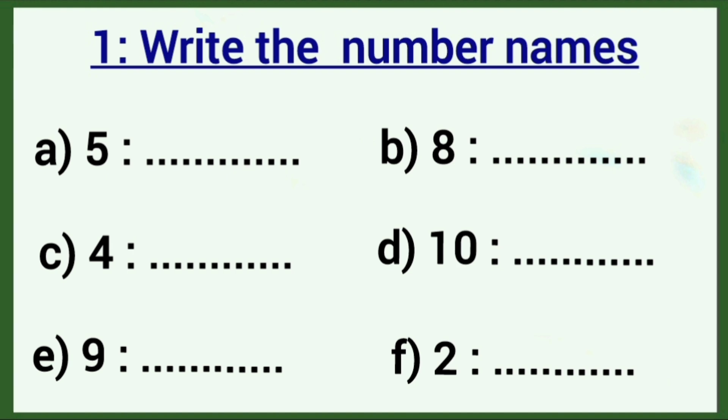Here, numbers are given. We want to write its name. So first one, which number is this? Five. Spelling, F-I-V-E. F-I-V-E, five.